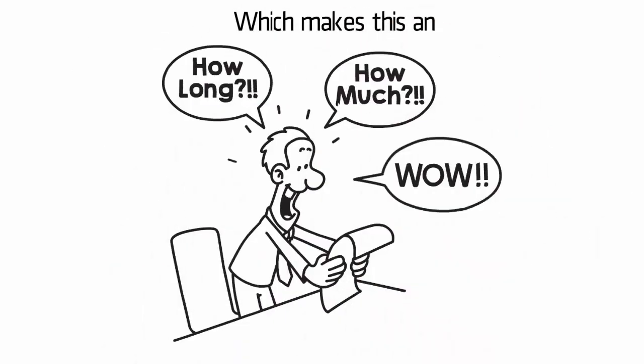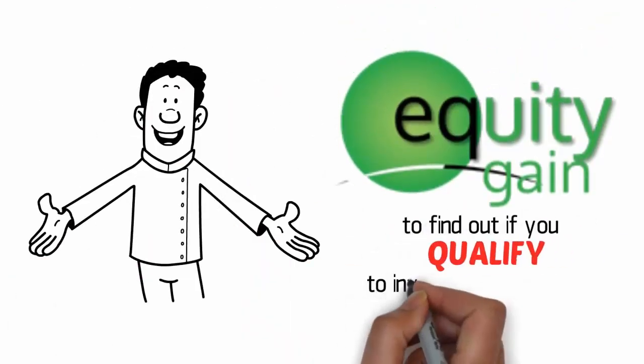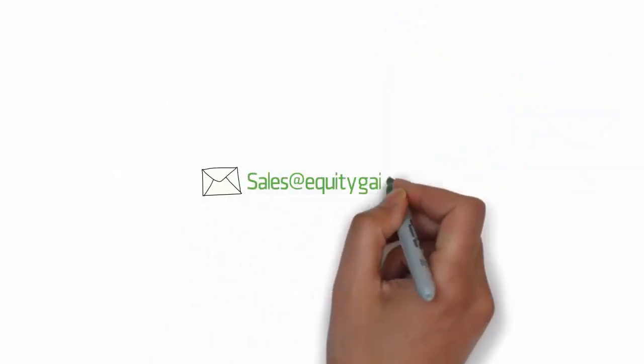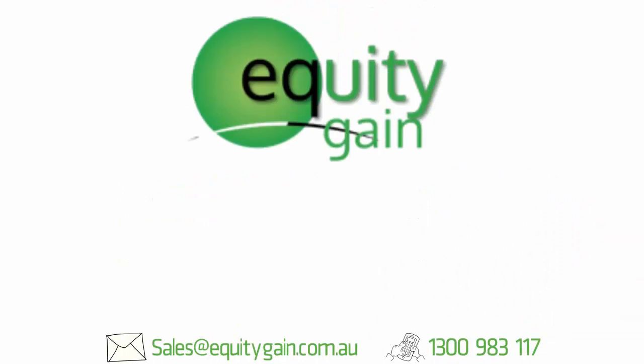This makes this an awesome opportunity for people when the bank said no. Reach out to Equity Gain to find out if you qualify to invest into a unit trust. Just email them directly at sales at equitygain.com.au or call them on 1300 983 117. You can thank me later.